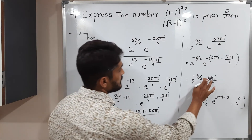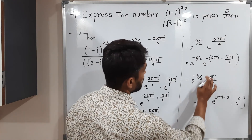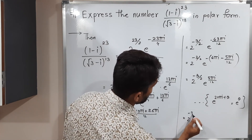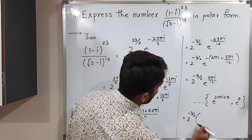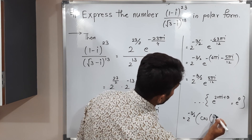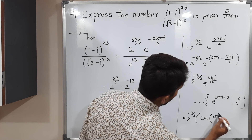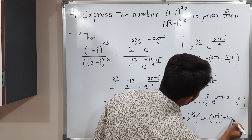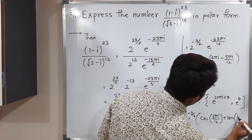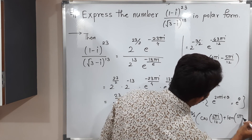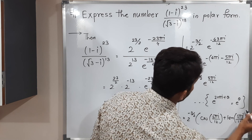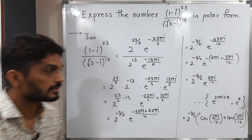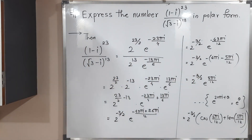Now let us express this in polar form. Converting from exponential form: 2 raised to minus 3 by 2 times (cos(5 pi by 12) plus i sin(5 pi by 12)). This is the required answer. You can take a screenshot of it. Thank you.